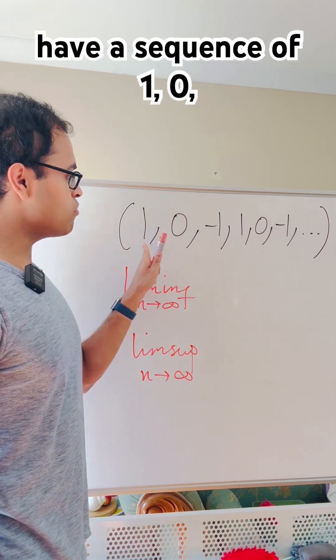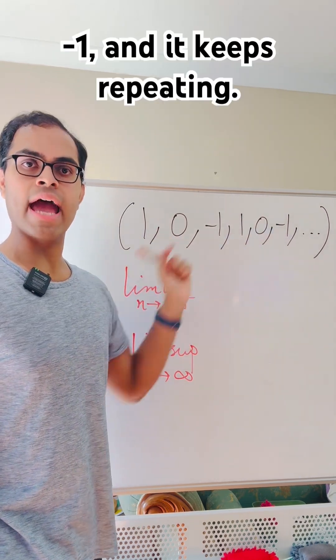So here we have a sequence of 1, 0, minus 1, 1, 0, minus 1, and it keeps repeating.